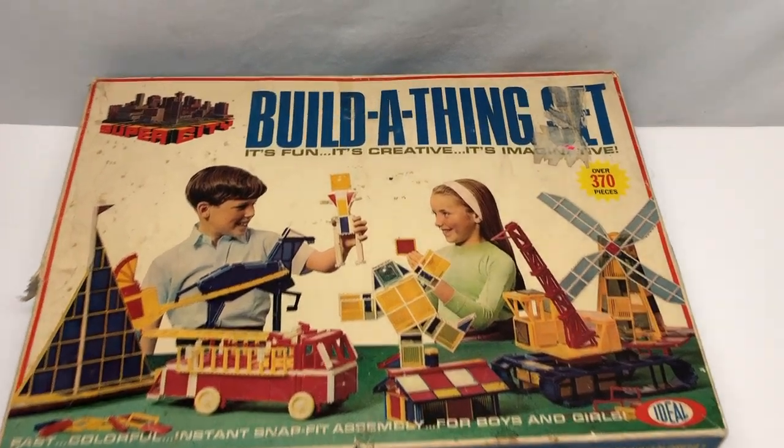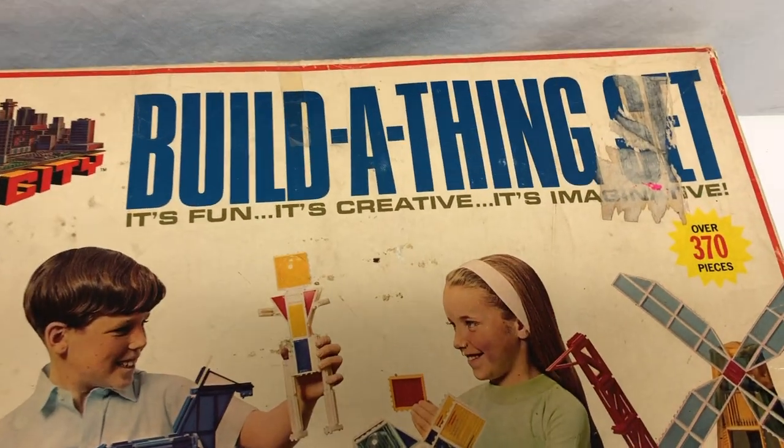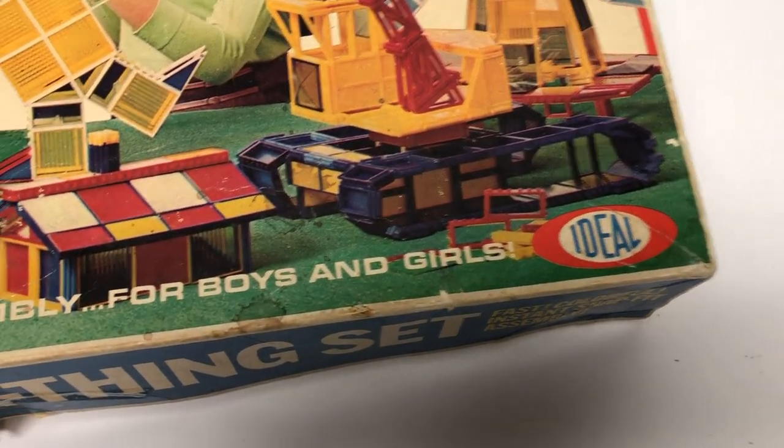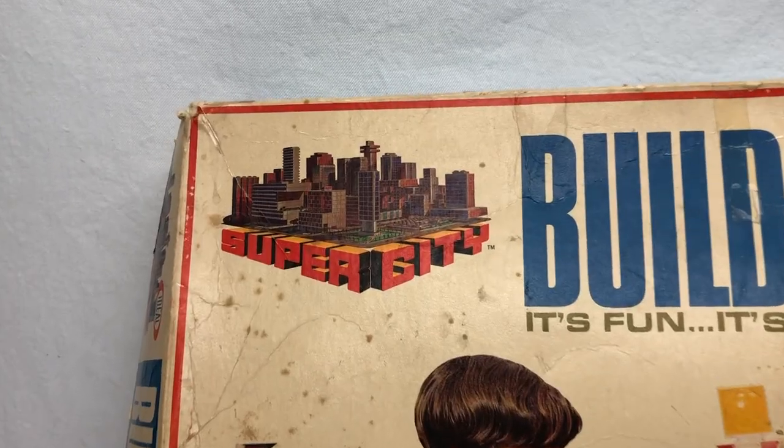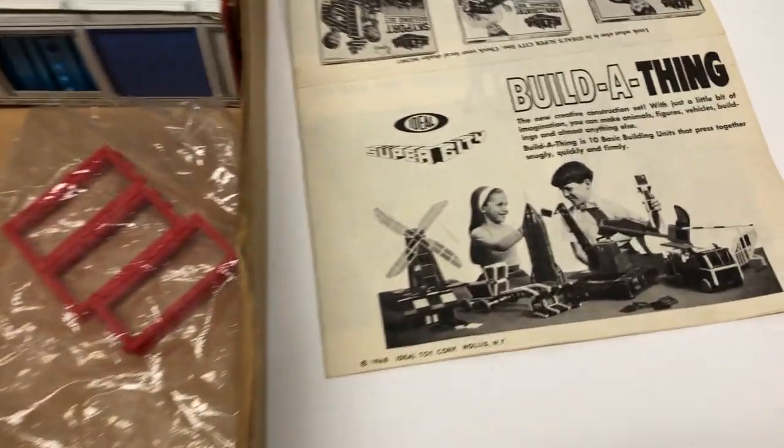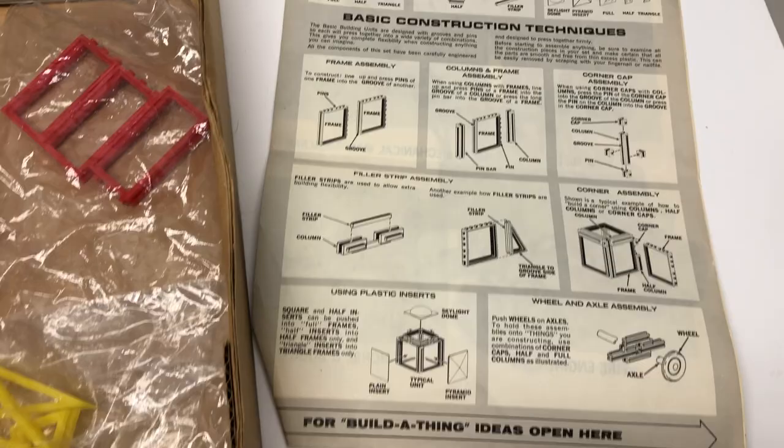So check this out. This is Build-A-Thing set. Fun, creative, imaginative, 370 pieces. It is from Ideal. It's for boys and girls. I like the super city graphic on here. So the directions show that this is from 1968. It's giving you some idea about the parts.